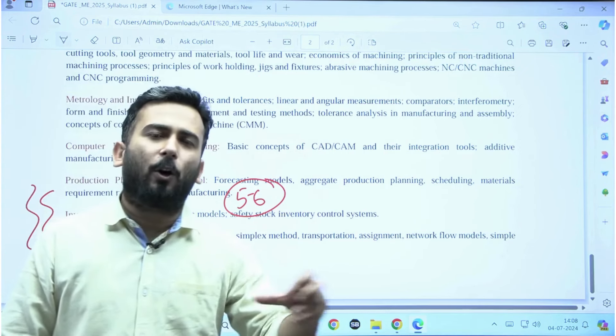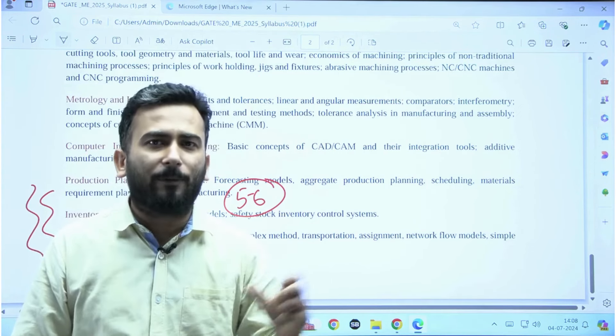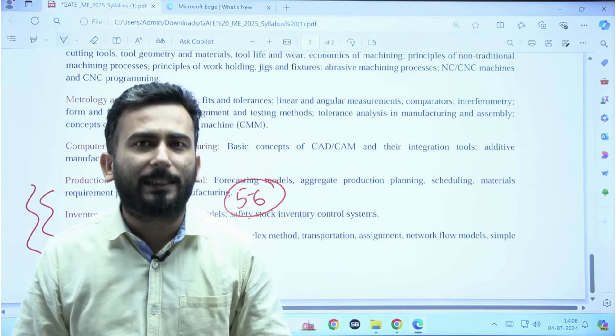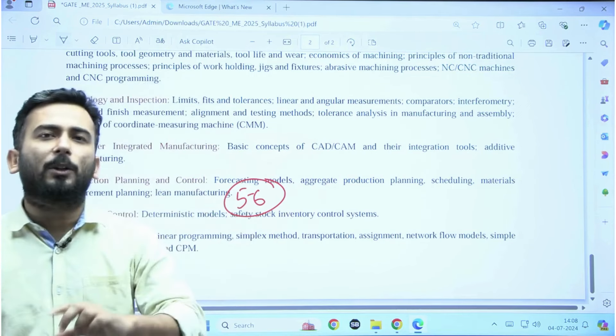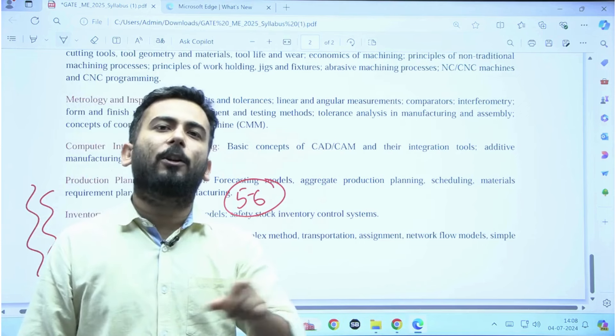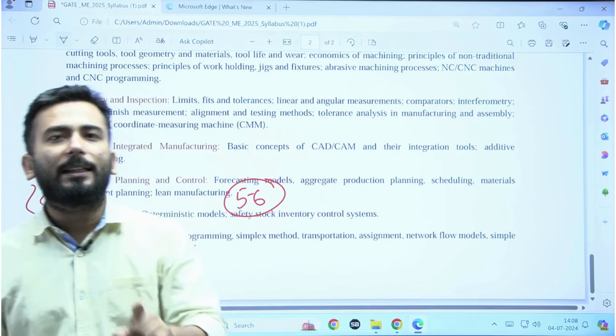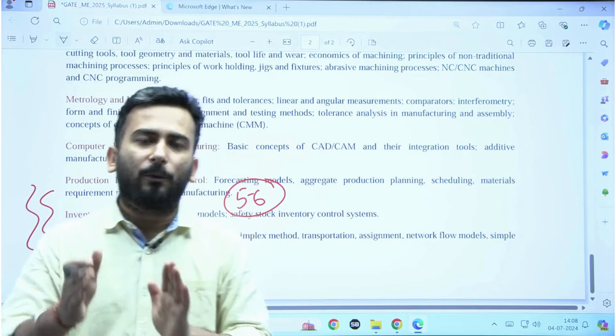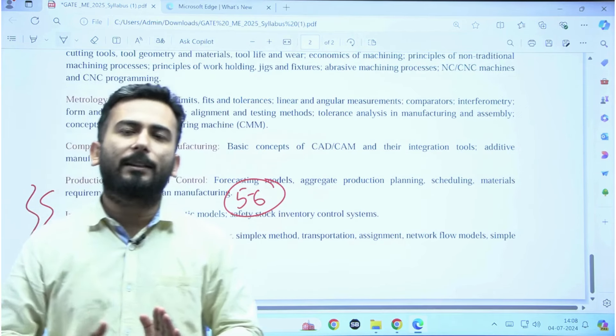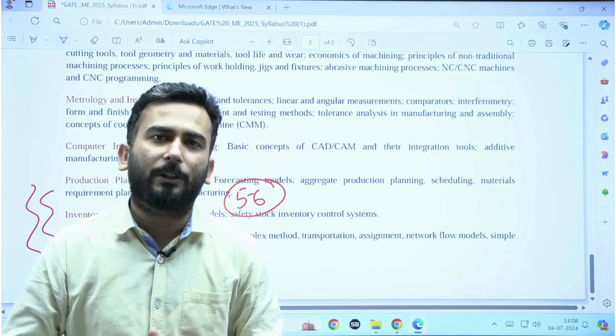But try to cover all the topics, number one, cover everything, focus on the easier subjects and even if you start from here and if you focus only on the important topics, then also you will be able to score at least 50 to 60, at least 60 in the next 6-7 months of preparation.